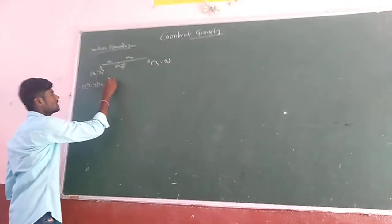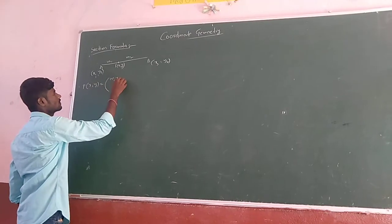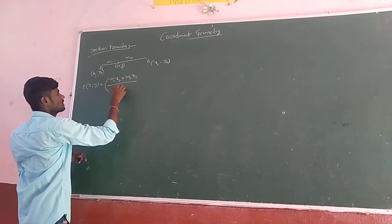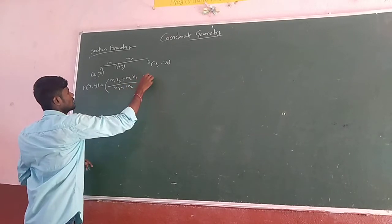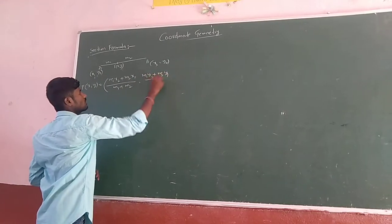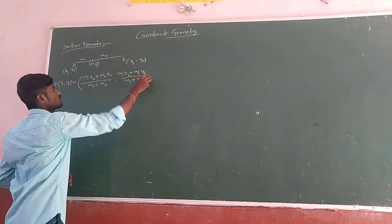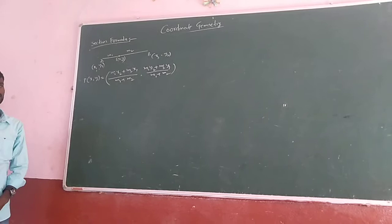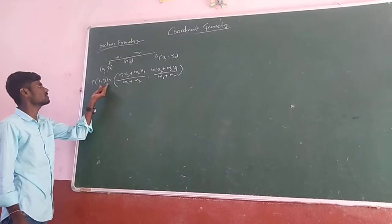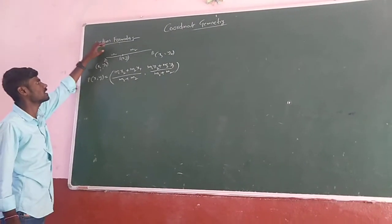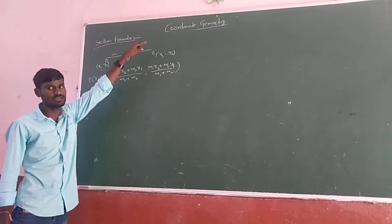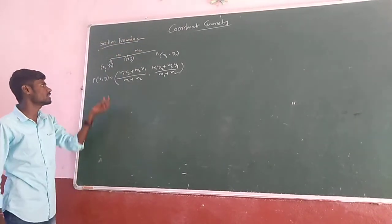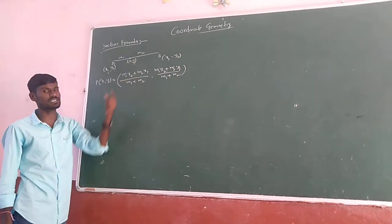Internally, that formula can be M1X2 plus M2X1 by M1 plus M2 and M1Y2 plus M2Y1 by M1 plus M2. So by substituting this formula, we will get the point P of X, Y. This P of X, Y by the section formula, the line joining A and B divided by P of X, Y in the ratio M1 is to M2, that can be found with the help of this section formula, where if it is internally.